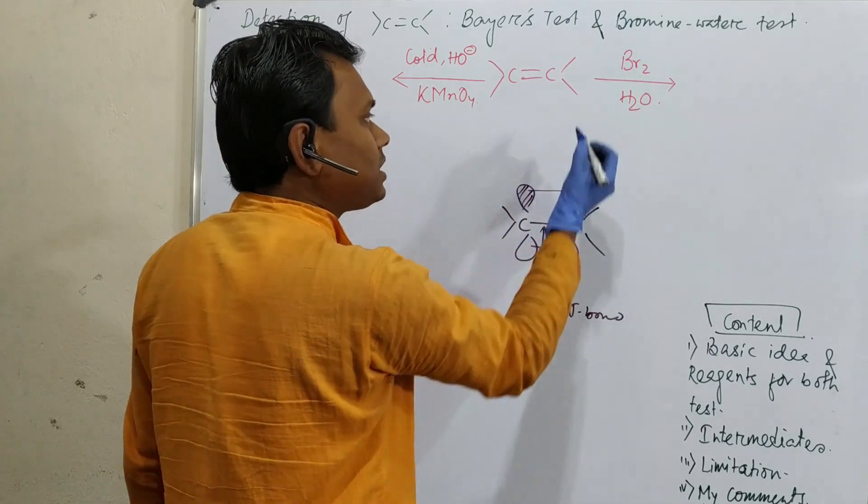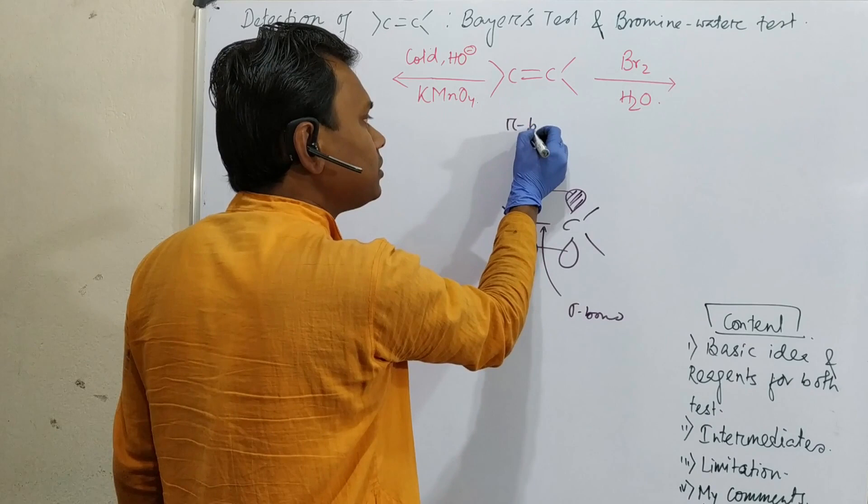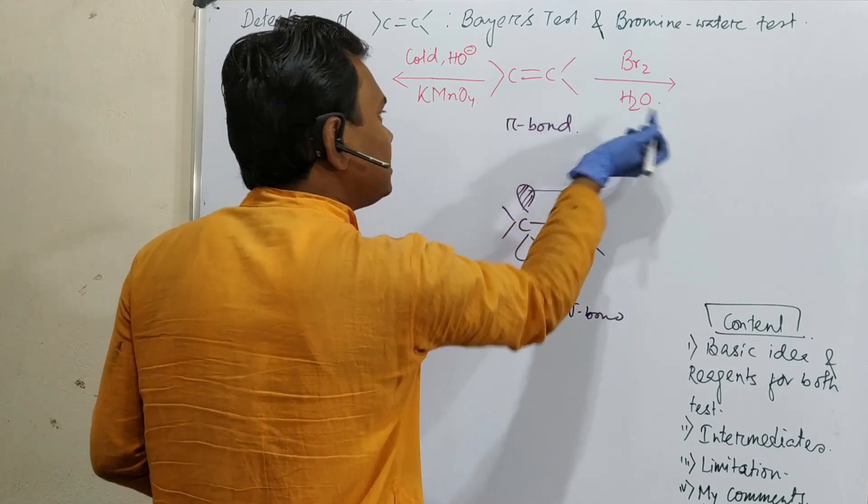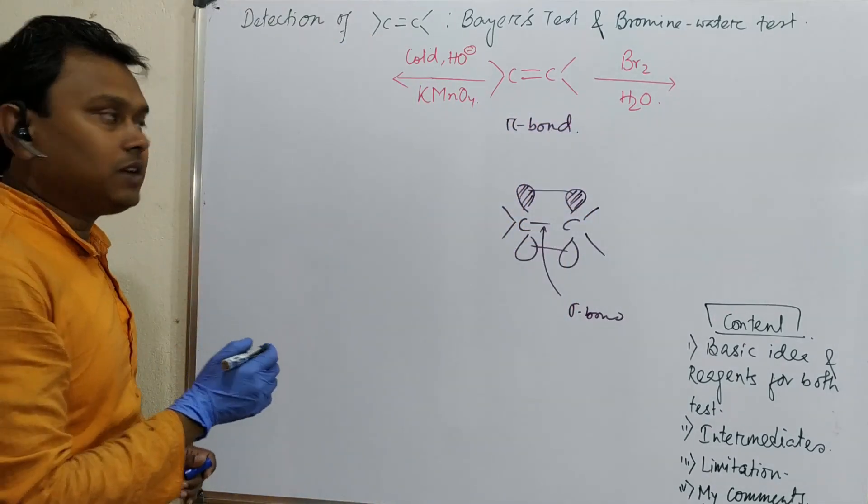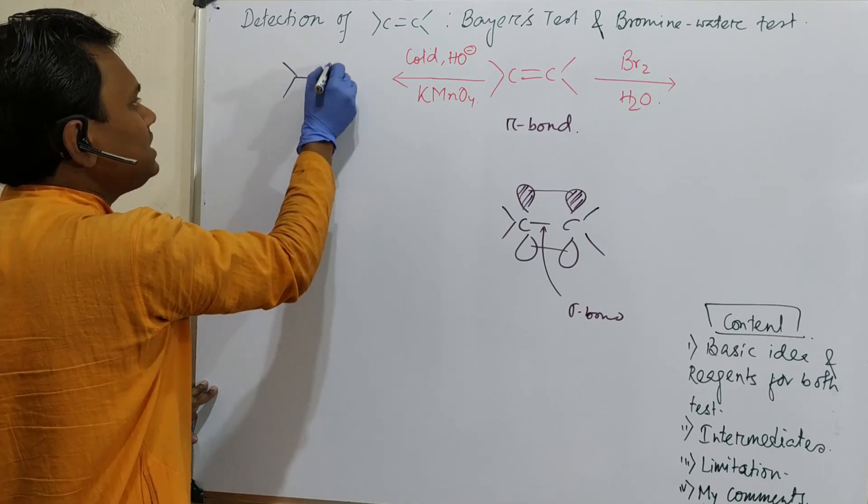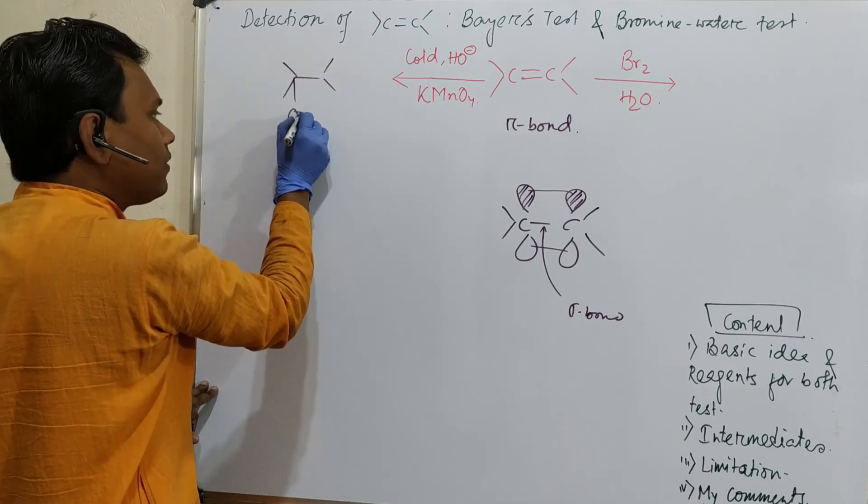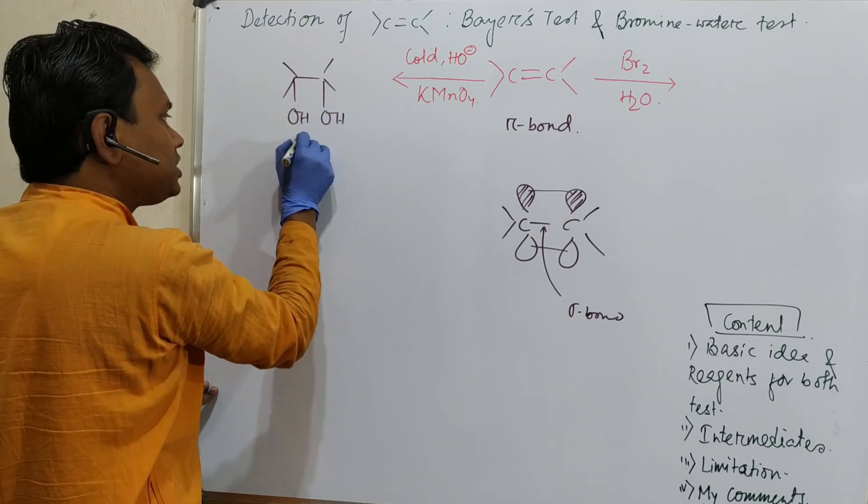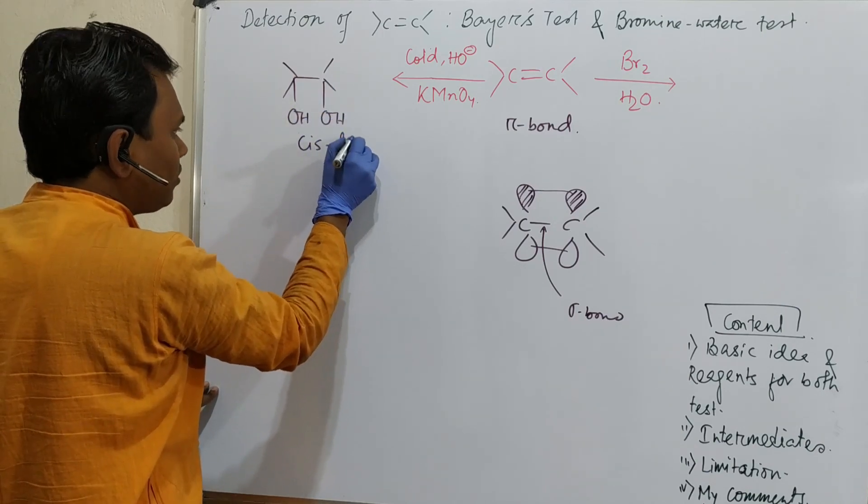That is the reason reaction is happening on the pi bond. So first reaction is a pi bond reaction. What happens? On the left side, cold alkaline KMnO4 results in cis-diol formation. Not only diol, always keep in mind, cis-diol.